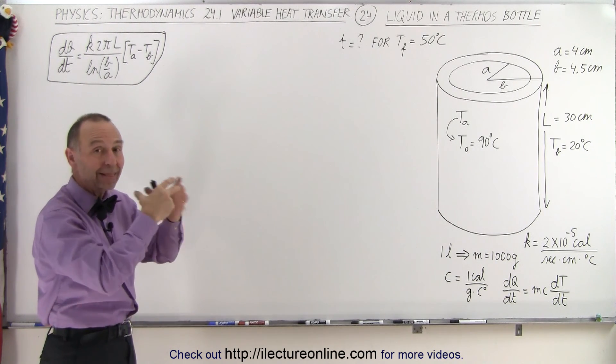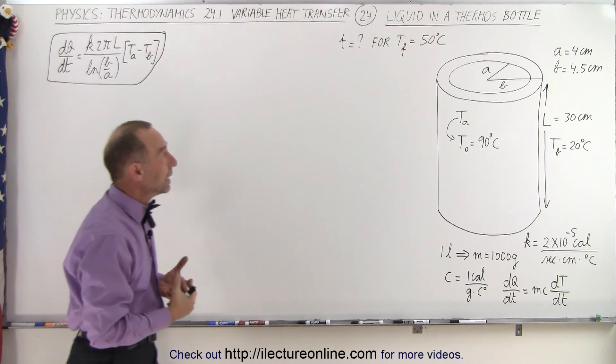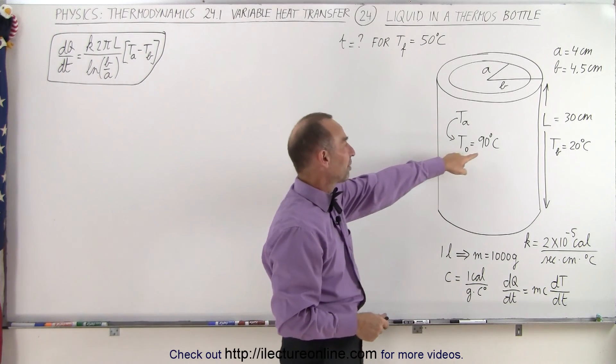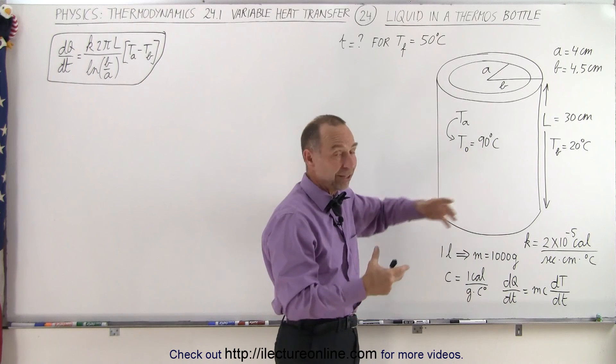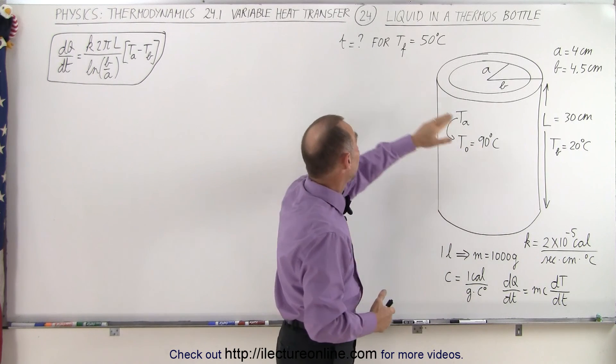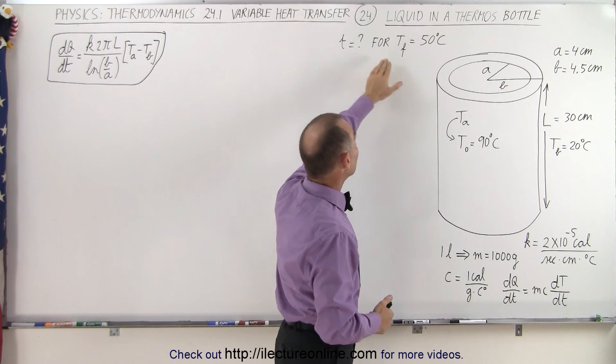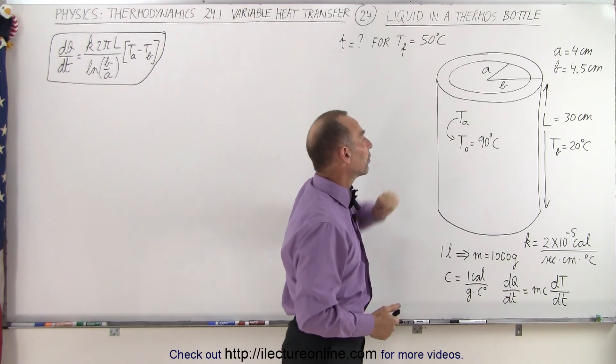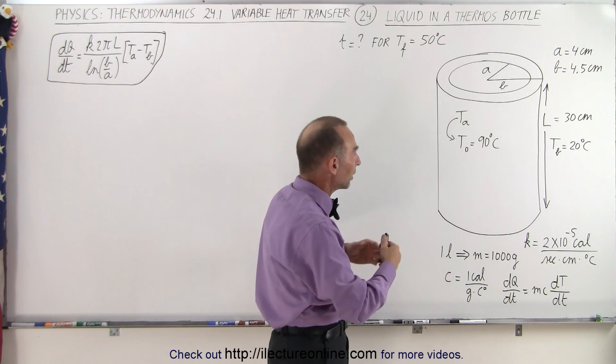A bottle in which we have hot liquid, and what we want to know is if the liquid starts at a temperature of 90 degrees centigrade, let's say a hot pot of coffee, how long will it take before the temperature will drop to 50 degrees centigrade. Now what are the specifics about the thermos bottle?